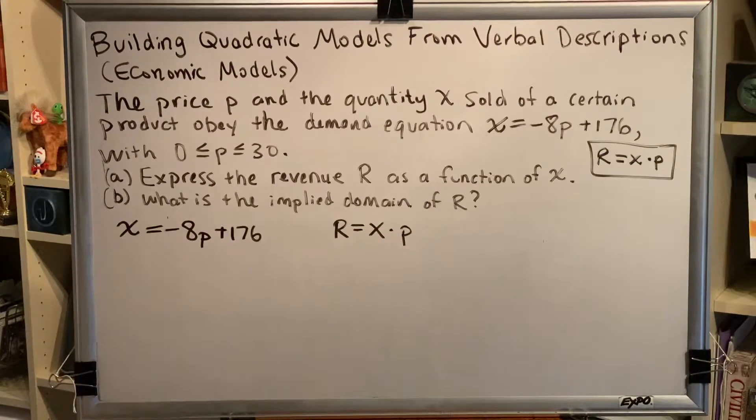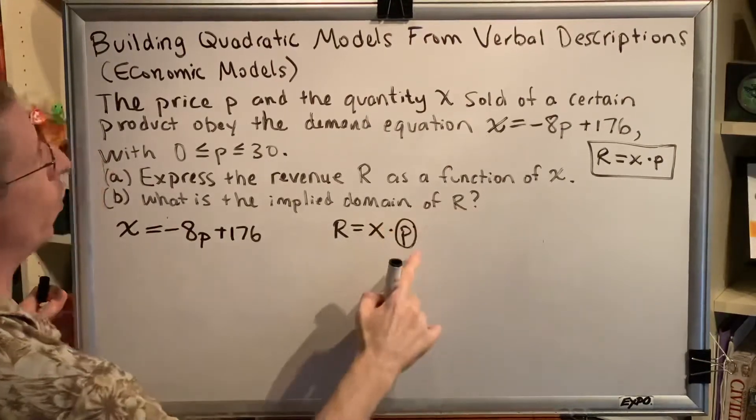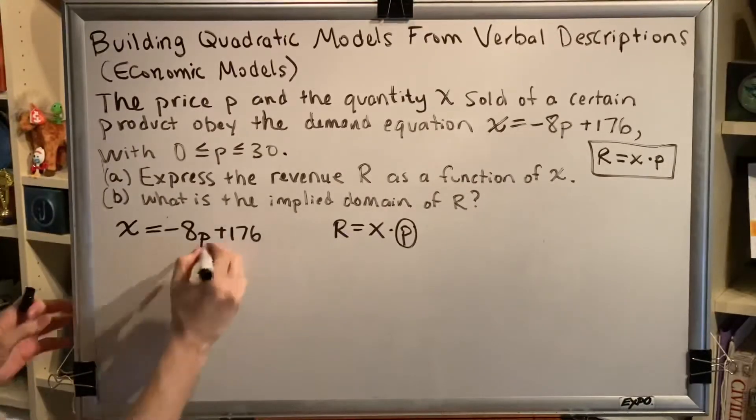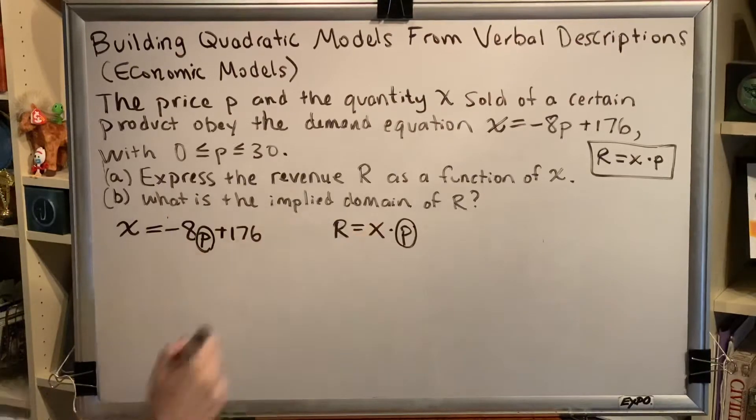There's just one problem. It also has p in it. We need to find a way to remove the variable p from this equation. And the way we do that is using the other equation, solving it for p, and then making a substitution.